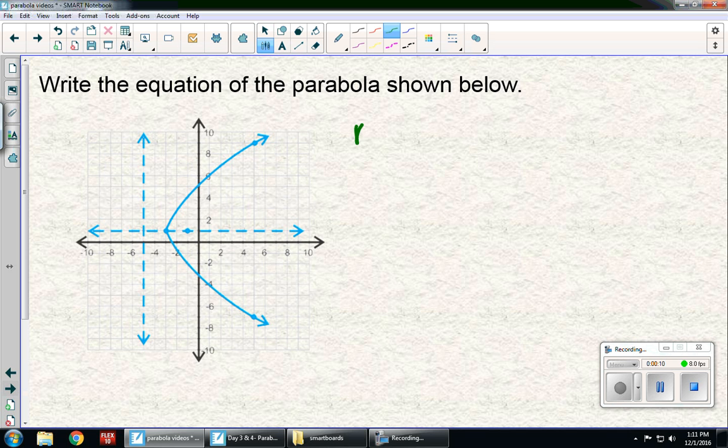So, this parabola is facing to the right, so I know two things. I know that it's going to be y squared, and it's going to have a positive p.